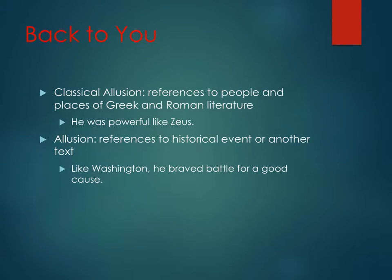Our final two figurative language tricks are classical allusion and allusion. A classical allusion is a reference to people and places specifically of Greek and Roman literature. An allusion in and of itself is a reference to a historical event or another text. As an example: "He was powerful like Zeus" — notice there's a "like" in there too, so it also makes it a simile. And then an allusion to history: "Washington braved battle for a good cause." In both cases we are talking about powerful men — or in Zeus's case, a god. The tone created is one of power and impressiveness. If you're comparing someone to Zeus or to Washington, you're conveying that they too are very powerful, impressive, and should be respected.